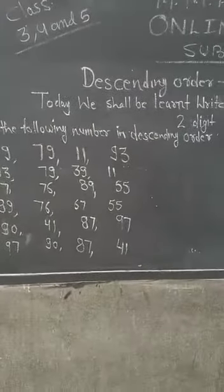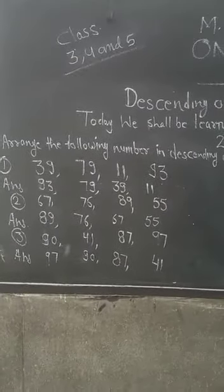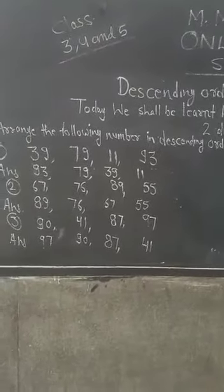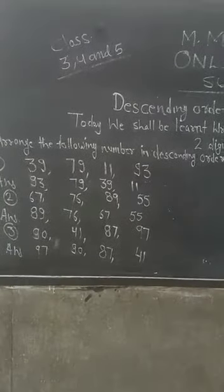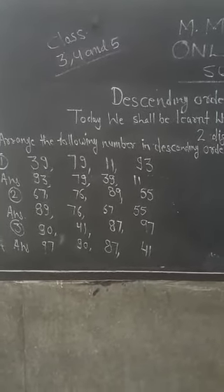Third question में 90, 41, 87, 97. So, सबसे बड़ा number जो है, greatest number, 97, 90, 87, and last में 41.